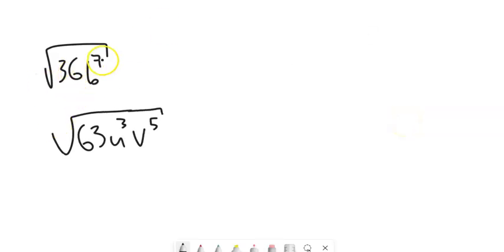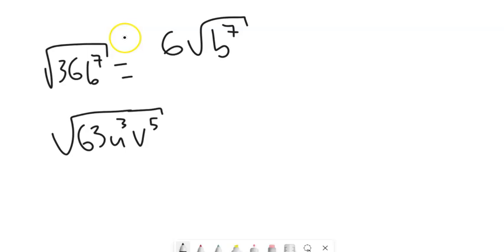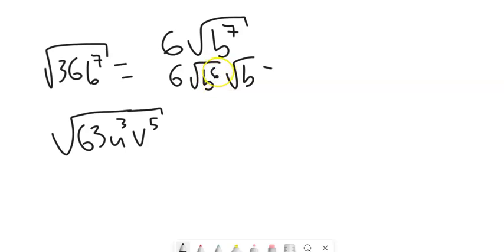Square root of 36 b to the 7th: square root of 36 is 6. So I have 6 times the square root of b to the 7th. I can split b to the 7th as b to the 6th times b. I can halve that exponent — square root of b to the 6th is b cubed. So this is 6 b cubed times the square root of b, and that is simplified completely.